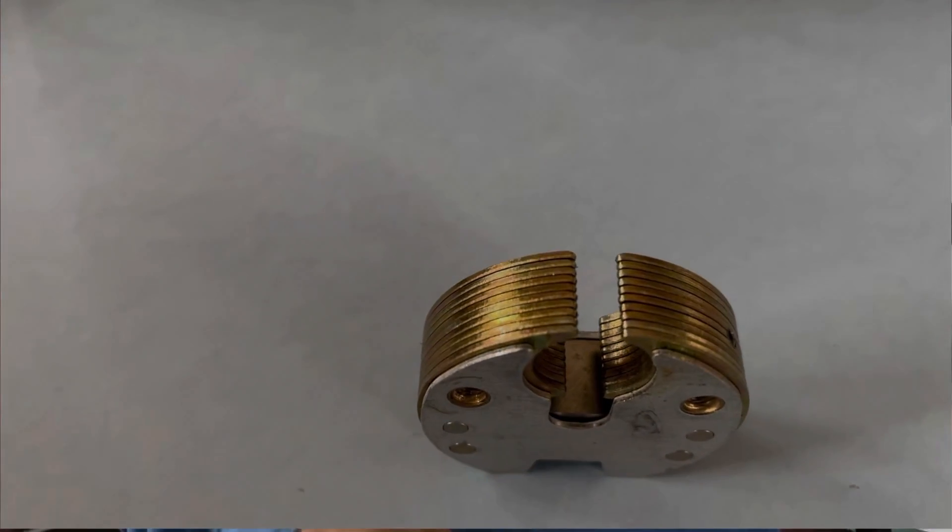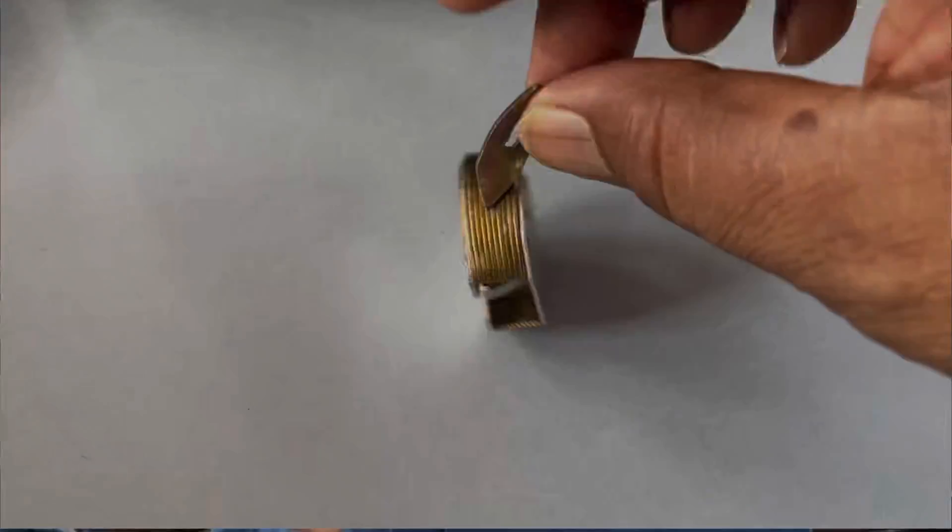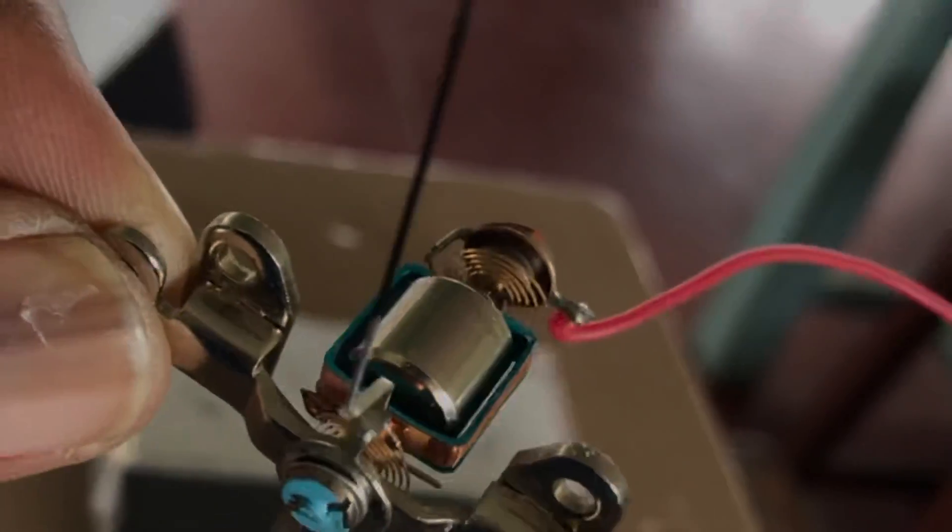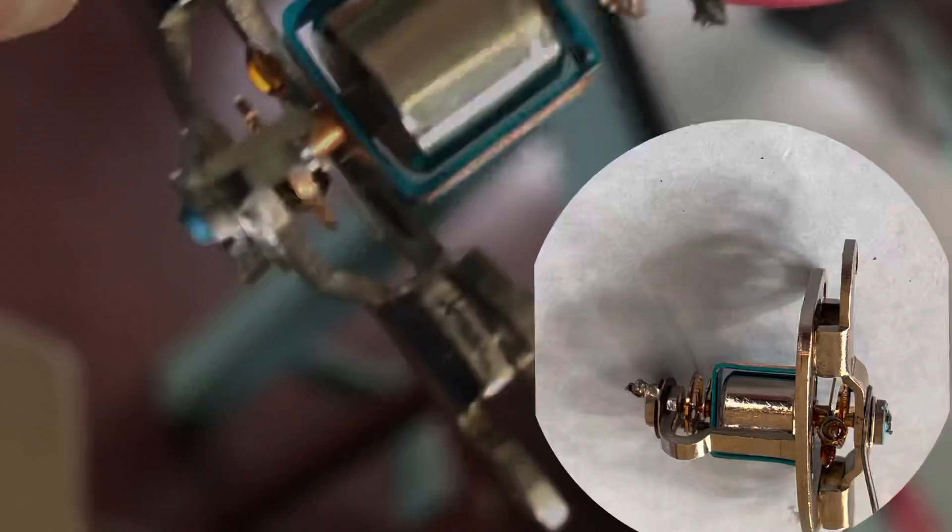Anyway, this is a soft iron piece. The rectangular coil, can you see now? And the pivot also can be seen.